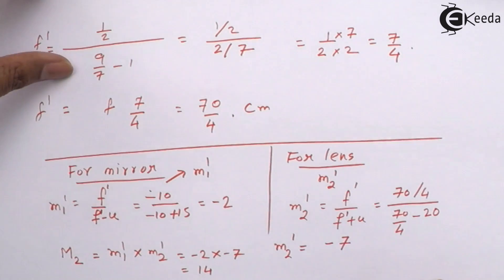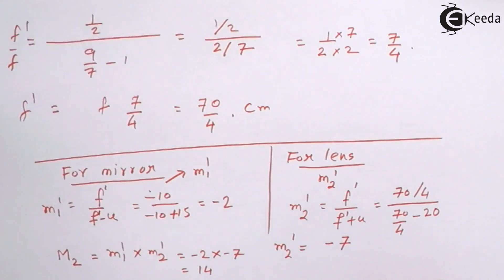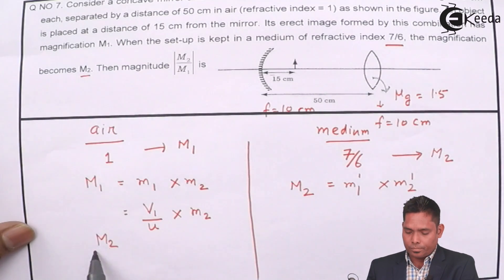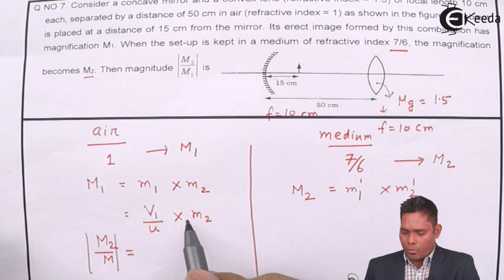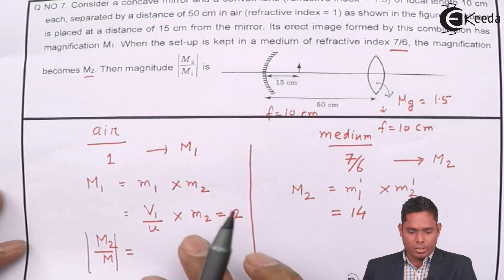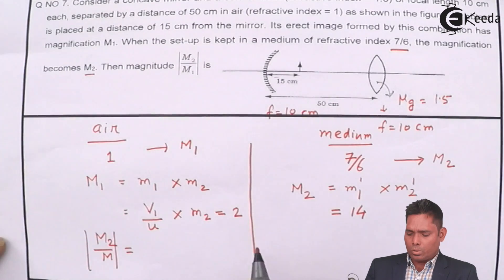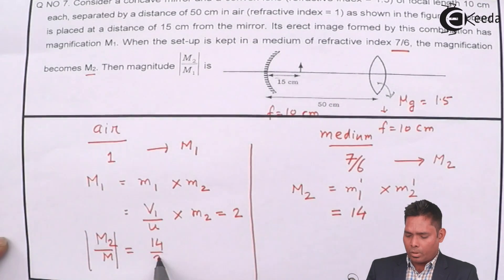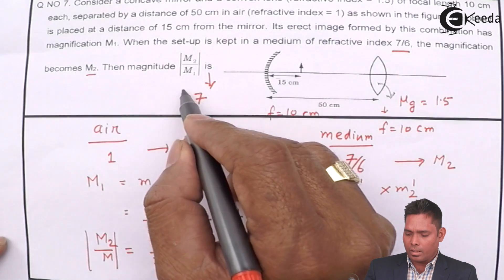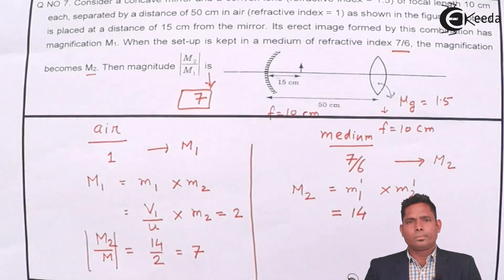Now we have M1 = 2 and M2 = 14. The question asks for |M2/M1| = |14/2| = 7. So the answer to this question is 7. Thank you.